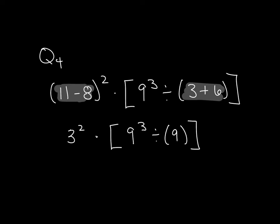Now I'll go through and do my exponents. So I want to go 3 squared is equal to 9 and 9 to the third is equal to 729. So that gives me 9 times the quantity of 729 divided by 9.